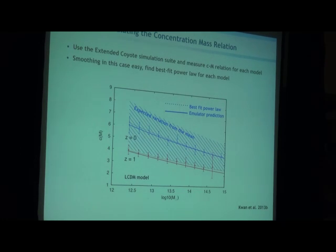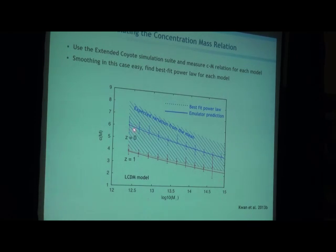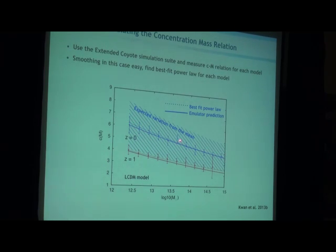Another thing Juliana did was look at the concentration-mass relation. The concentration is one parameter characterizing the halo profile. You can measure that from all these simulations and build a concentration-mass relation emulator that goes through different cosmologies. The blue line is the prediction from the emulator, and the dotted line is just the best-fit power law through measurement points. You can download this and measure the concentration-mass relation for different cosmologies at pretty high accuracy.